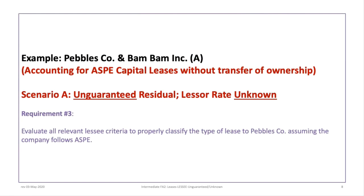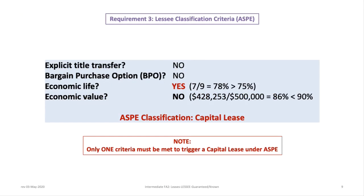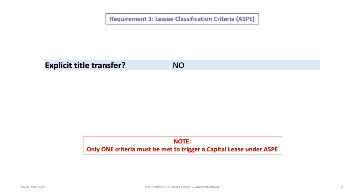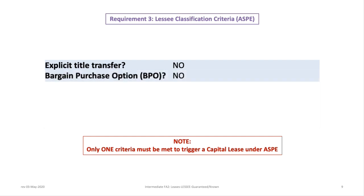Requirement 3 is to evaluate all relevant lessee criteria to classify the lease for Pebbles under ASPE. There are four criteria, and only one must be met to trigger a capital lease. First, is there a transfer of title to the lessee at end of lease? No — ownership reverts to the lessor, so this criteria is not met. Second, is there a bargain purchase option (BPO), where the lessee can buy the asset below expected residual value? There is no BPO, so this criteria is also not met.